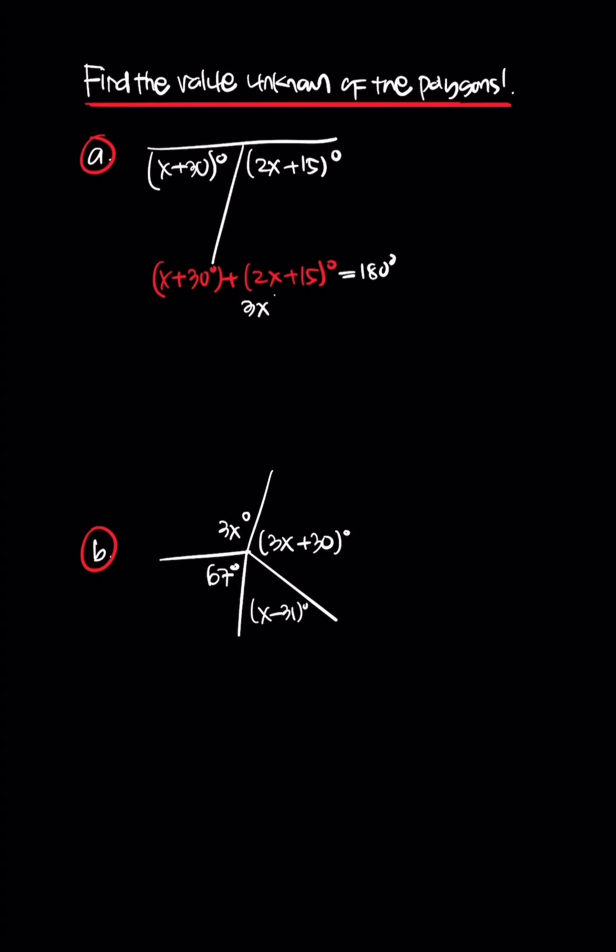This is 3x degrees plus 45 degrees equals 180. Then 3x equals 180 minus 45, which is 135 divided by 3. This gives us x equals 45 degrees.